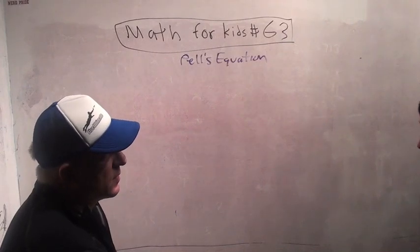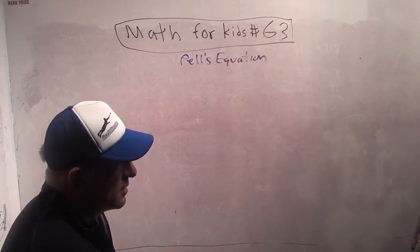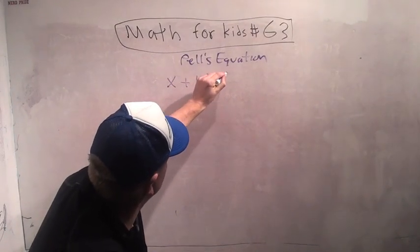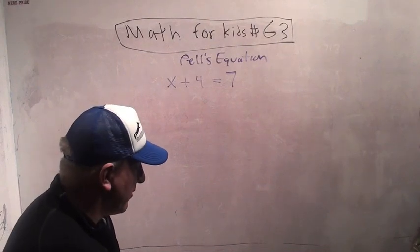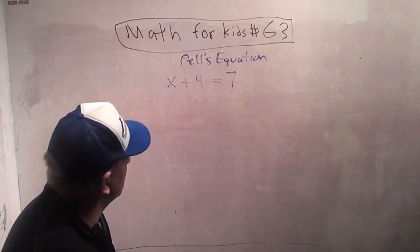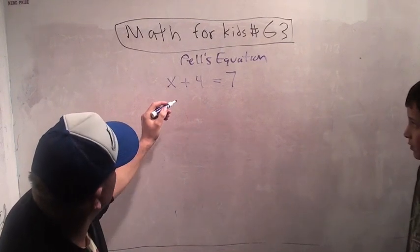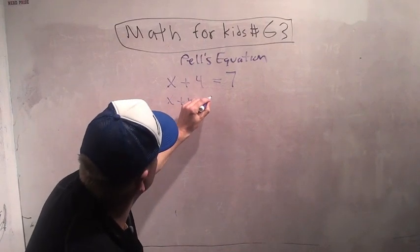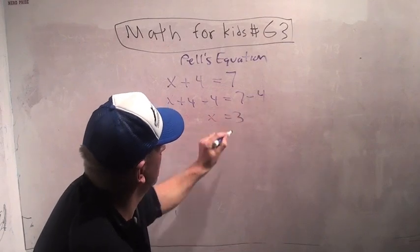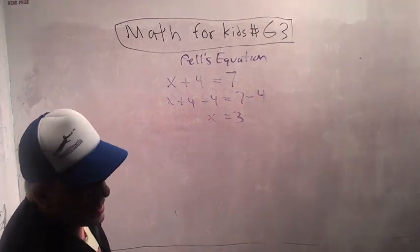Away from what we usually do in the videos, we've been learning a little bit about solving equations with variables like x plus 4 equals 7. So how do you solve this equation? You do 7 minus 4. Right, so you subtract 4 from both sides, then you do 7 minus 4, so you get x equals 3.